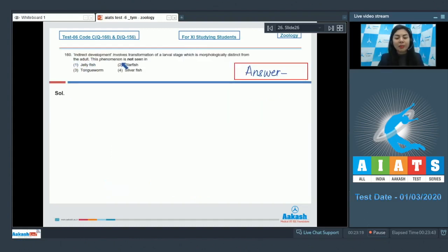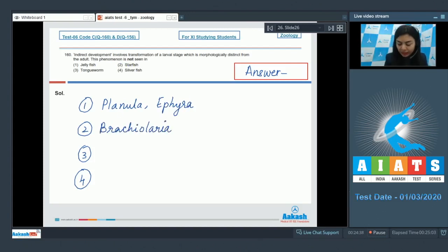Question 160: Indirect development involves transformation of a larval stage which is morphologically distinct from the adult. This phenomenon is not seen in jellyfish, starfish, tongue worm, or silverfish. Let's look at the developmental stages of each one of these options. Option 1, jellyfish: Jellyfish does undergo its larval stage. The common larvae are planula, ephyra, etc. These are the larvae of jellyfish. Option 2, starfish: The larvae of starfish is called brachiolaria. So both of them have a larval stage.